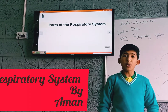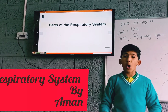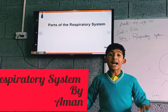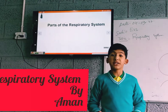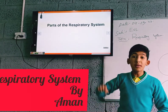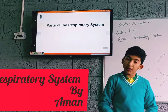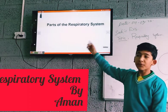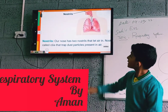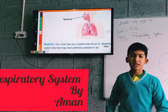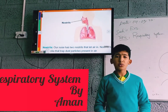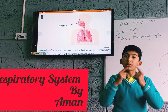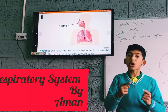Now we are going to discuss the parts of the respiratory system. There are mainly 9 parts. We will discuss the function one by one. The first part is the nostrils. Our nose has two nostrils through which we take in air.